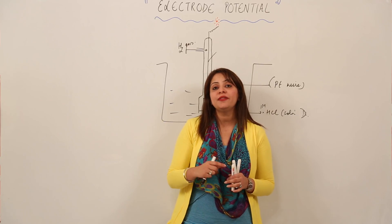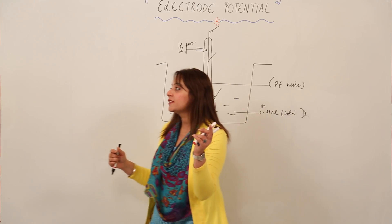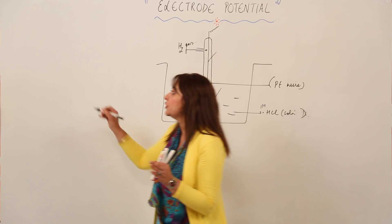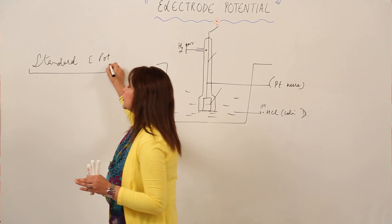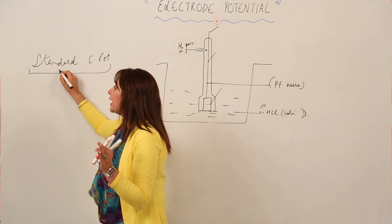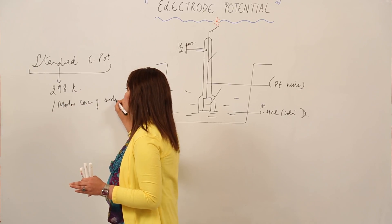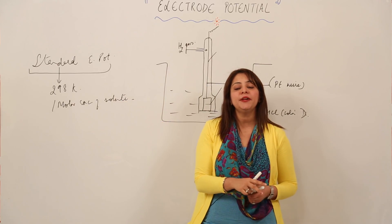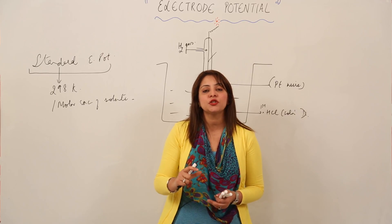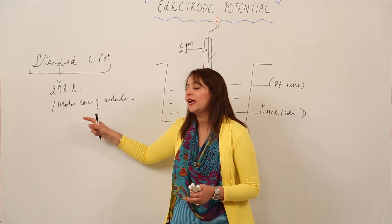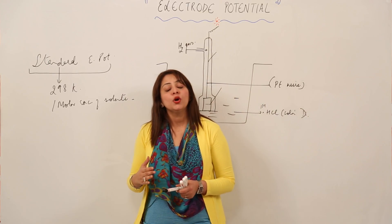Since electrode potential depends on concentration and temperature, we need a standardized value — the standard electrode potential. Standard electrode potential is the value of electrode potential measured at standard conditions: 298 Kelvin and 1 molar concentration of the solute. So if you see 'electrode potential,' it refers to a given element's value, but 'standard electrode potential' means the value measured at these standard conditions.